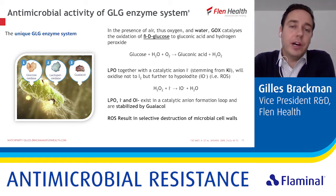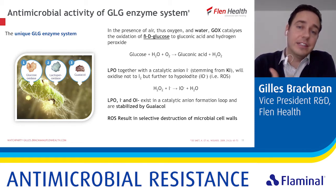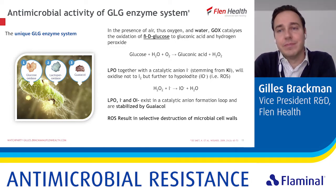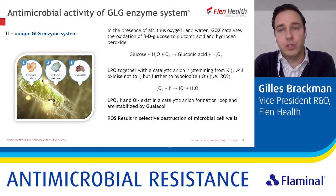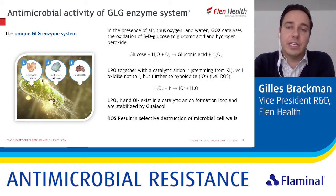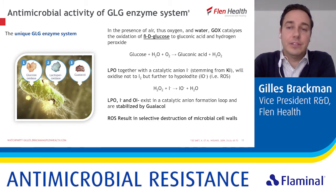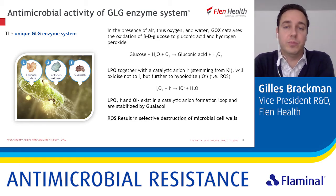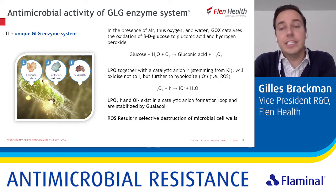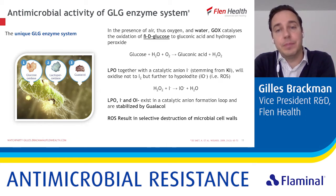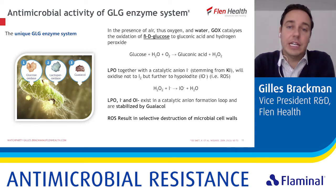Before going into these details, I will briefly explain how the antimicrobial activity of the GLG enzyme system works. The enzyme system consists of three parts: a glucose oxidase, a lactoperoxidase, and a guaiacol. In the presence of oxygen and water, glucose oxidase catalyzes the oxidation of glucose to gluconic acid and hydrogen peroxide. It is then that second part, lactoperoxidase, together with a catalytic anion, that will oxidize this further to hypoiodide — a reactive oxygen species — which is then stabilized by guaiacol, the third part of our GLG enzyme system.